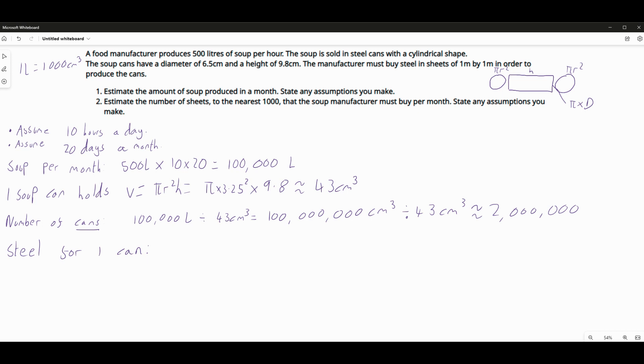So in this case that's going to be, so I'll just write the formula, 2 pi r squared plus pi times diameter times the height. So that's going to be 2 times pi times 3.25 squared plus pi times the diameter is 6.5 and the height is 9.8 as you can see there. So I pop it into my calculator. I'll find that's going to be 207 or roughly about 207 centimeters squared.